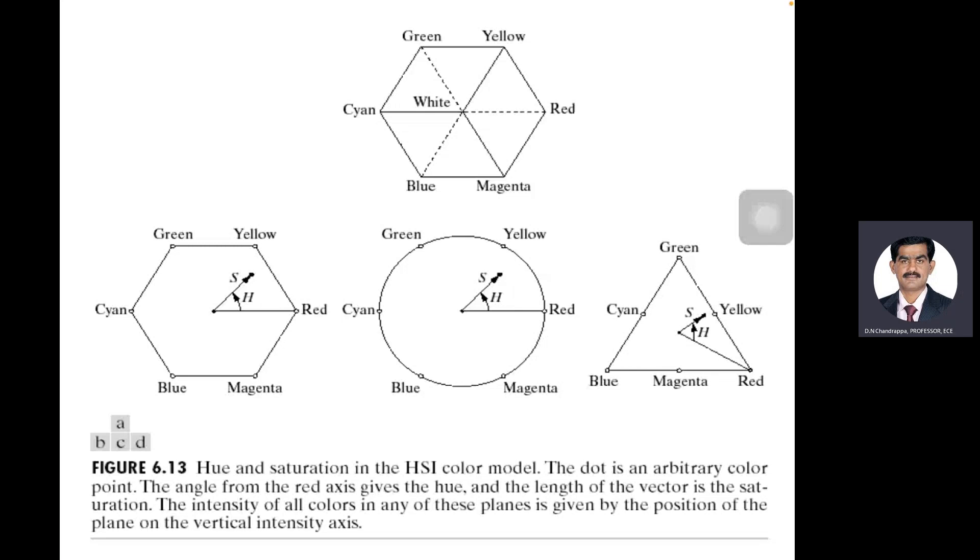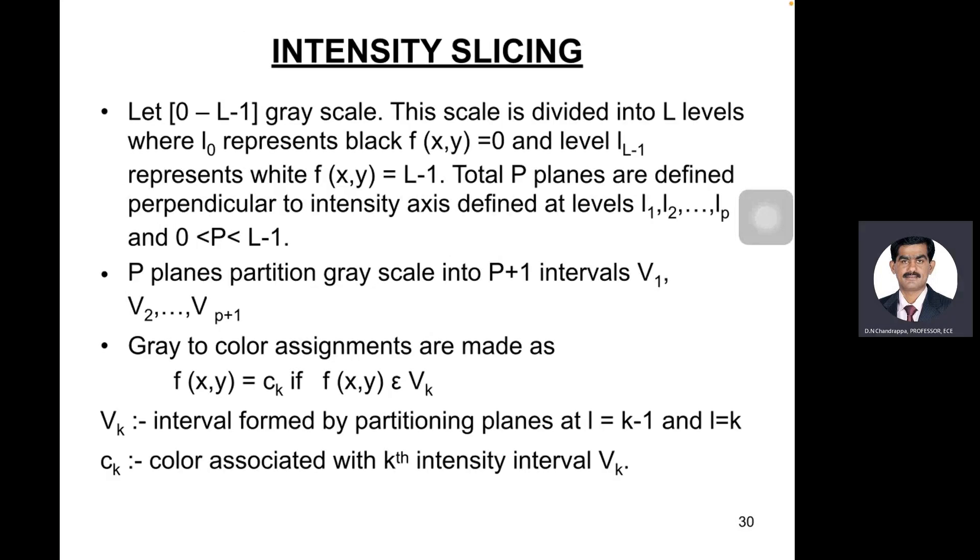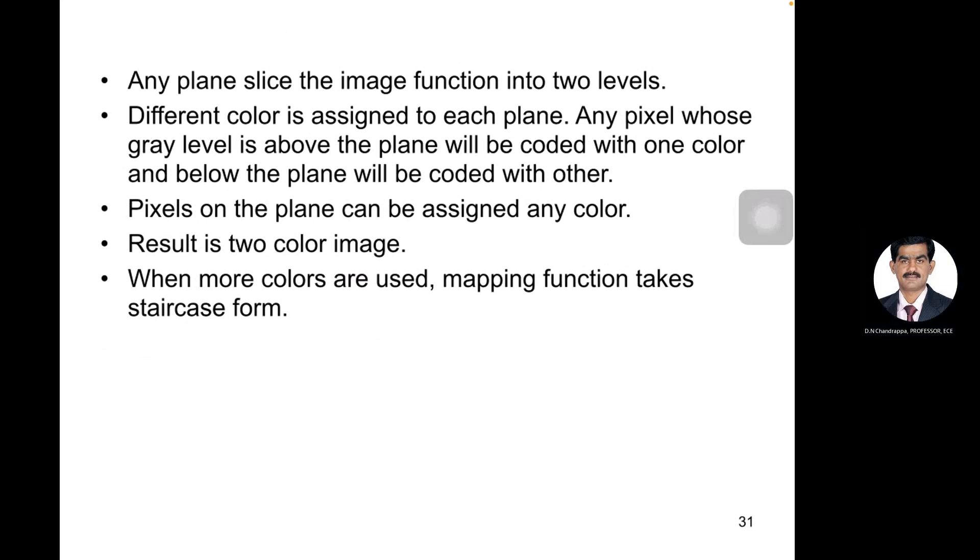What do you mean by intensity slicing? Intensity slicing is nothing but let us start from zero to L minus one, that's the grayscale zero to 255. L is 255. So here in the intensity slicing, we slice the plane. How to represent that gray level axis? The origin we have to represent zero X and Y coordinates. This is the geometric representation of intensity slice technique.